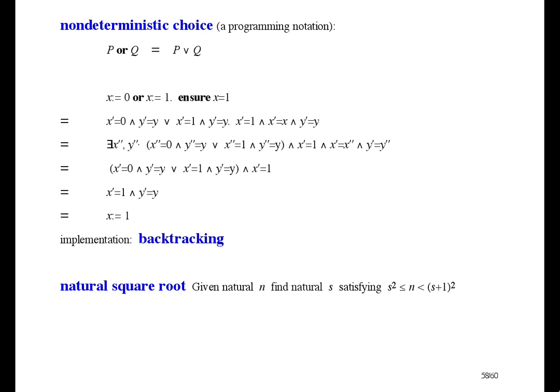Here's a nice little example. Given natural n, find natural s satisfying this condition, which means that s is the square root of n rounded down. The square root of 16 is 4, and the square root of 17 up to 24 is 4 point something, so we take it to be 4. How can we calculate square root? With these constructs, it's easy.